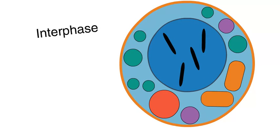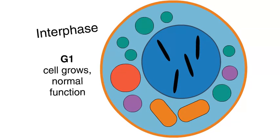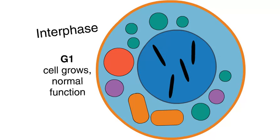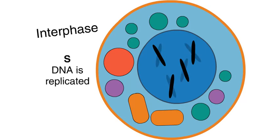Mitosis and meiosis are both types of cell division. A cell begins in interphase. During the G1 phase, the cell grows and performs its normal function. Then, during the S phase, the DNA is replicated.